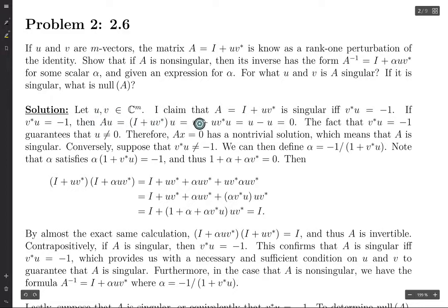So let's take U and V to be vectors. I'm going to claim that A equals I plus U V star is singular if and only if V star U is negative 1, i.e., the inner product of V and U is negative 1.